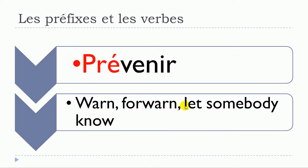And then we can also add P-R-É, with accent aigu. PRÉ — PRÉVENIR. PRÉVENIR.